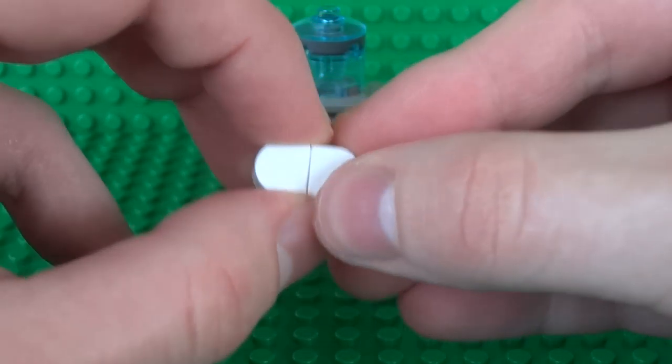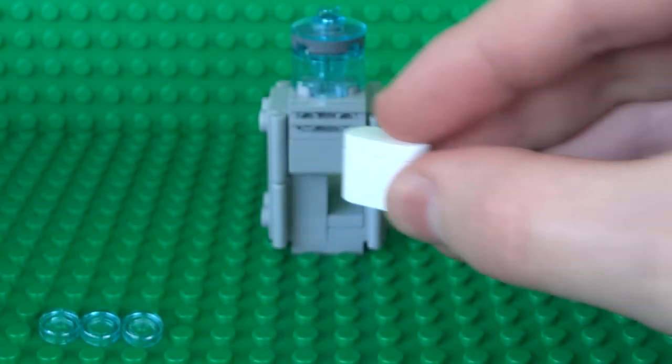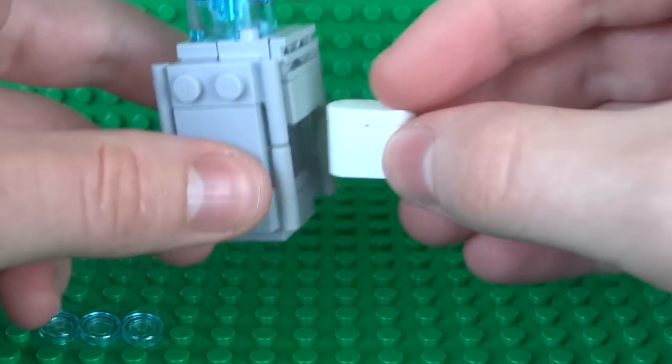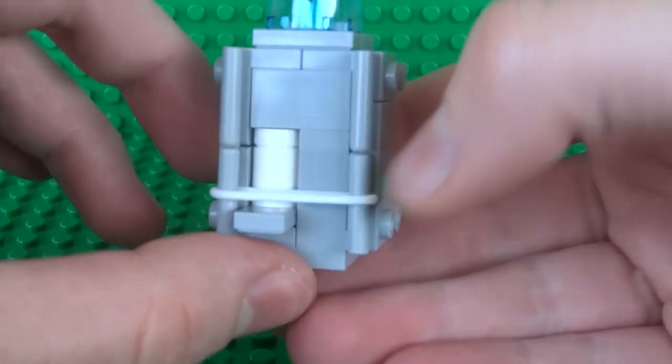The reason this whole assembly is round is just so it slides a bit better when you push the button in and out and so it doesn't get stuck as much.